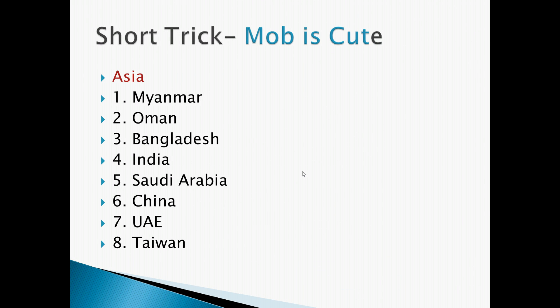For Asia, the shortcut trick is 'MOB IS CUT' — we neglect the last E and consider only 'MOB IS CUT'. The abbreviations are: M for Myanmar, O for Oman, B for Bangladesh, I for India, S for Saudi Arabia, C for China, U for UAE, and T for Taiwan. This is the shortcut trick for Asia.